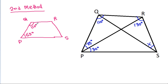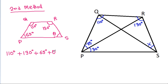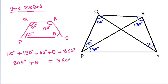Then 110 degrees plus 130 degrees plus 65 degrees plus Theta equals 360 degrees. So 130 plus 110 is 240, plus 65 is 305, and Theta equals 360 minus 305, which equals 55 degrees.